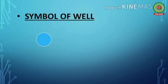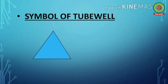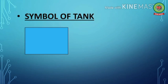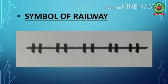Next we have well, shown as a blue dot on the map. Tube well is much deeper than an ordinary well; water is drawn with the help of a pump, and it is shown in a triangular shape with blue color. Next is tank — the main source of irrigation especially in rocky regions during dry season — shown in a square shape with blue color. Railway line is shown with black color.